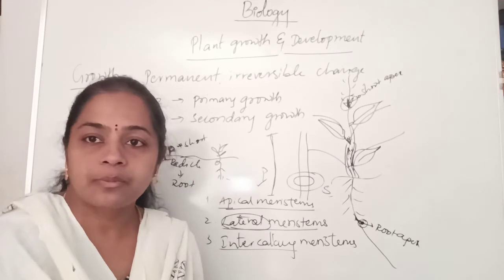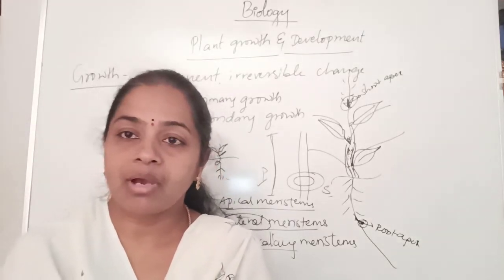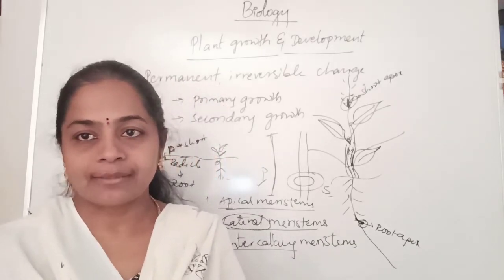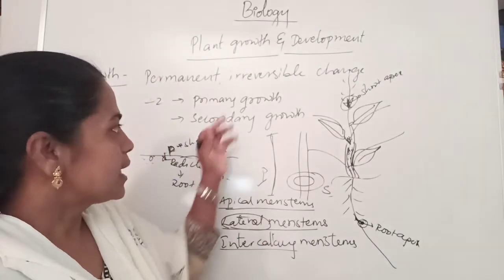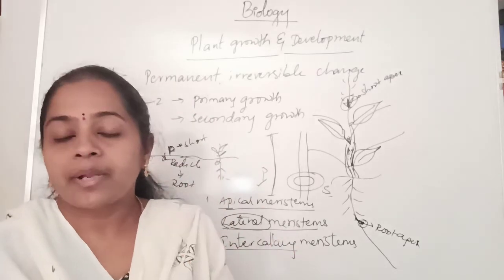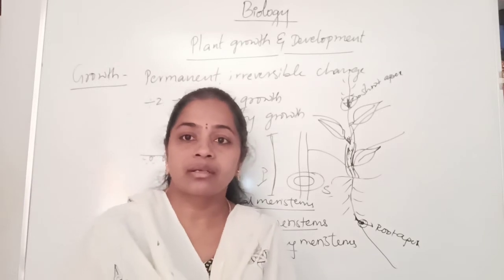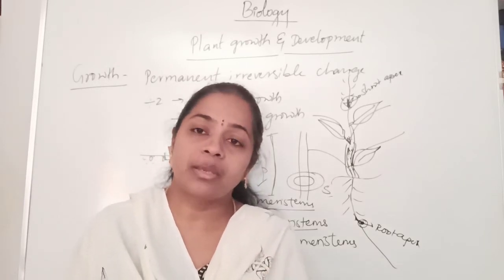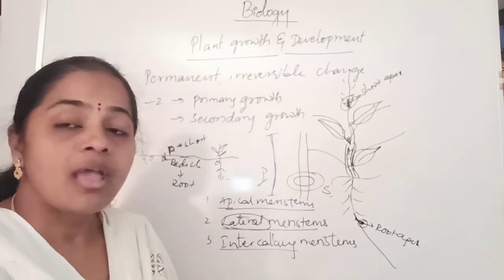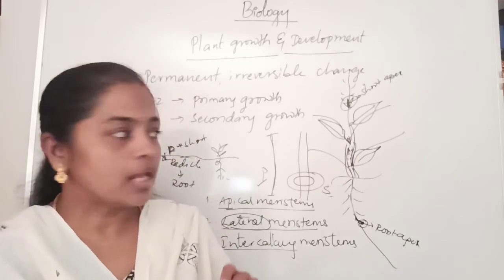Secondary growth — the major tissue responsible is Cambium: Vascular Cambium and Cork Cambium. Cambium tissue is present in dicot plants. In monocot plants, cambium is absent. Due to the absence of cambium, monocots do not undergo secondary growth. Only dicot plants show secondary growth.